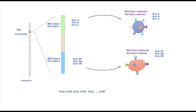In the HLA complex, genes that encode surface molecules are present in HLA class 1 and class 2 regions. In HLA class 1 region, three genes are present on each chromosome. These genes are HLA A, B, and C, that encode three HLA molecules. So a person can have up to six different types of HLA class 1 molecules.